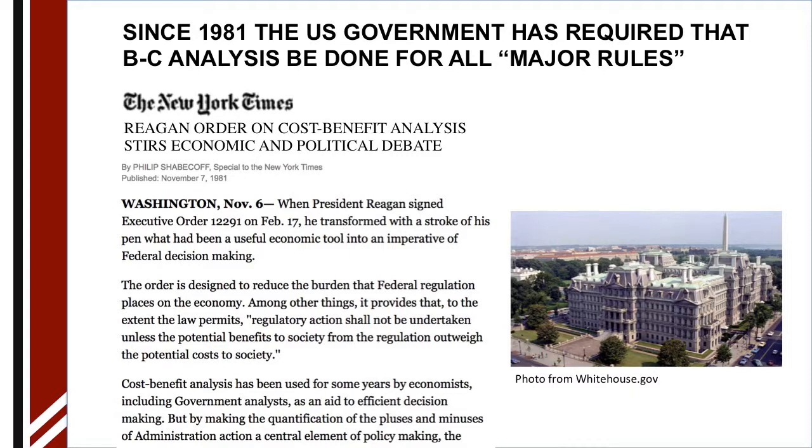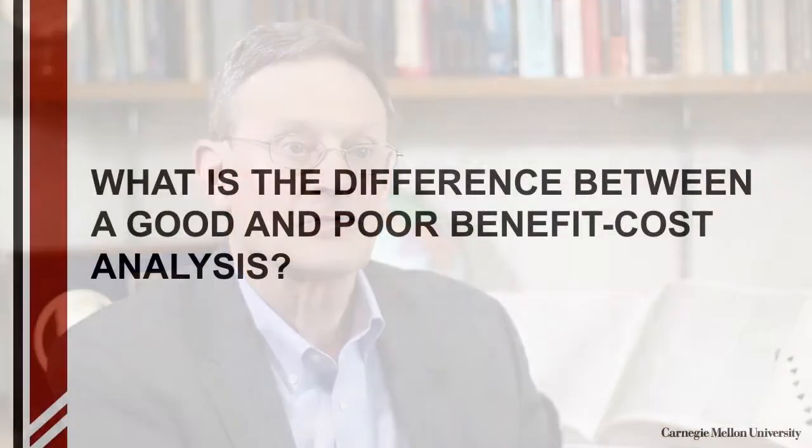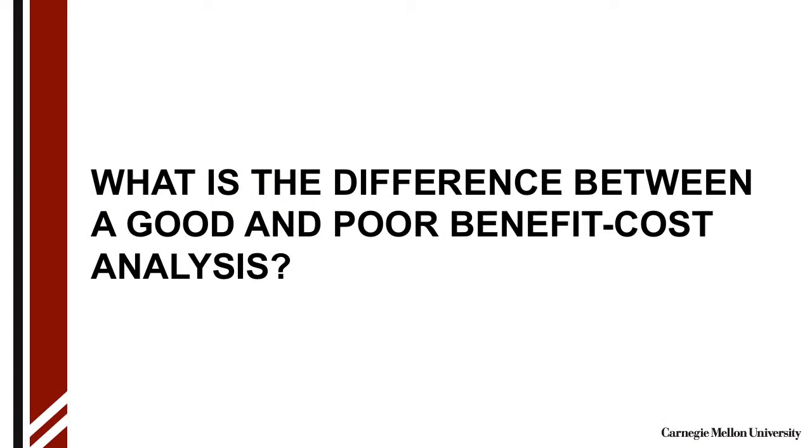Benefit-cost analysis has become very controversial over the years, with many people with different political views arguing for and against it. One of the big issues is that it's really only a method to assure efficiency, as opposed to assuring equity, and many political discussions are fundamentally about issues of equity. So what's the difference between a good and a poor benefit-cost analysis? A poor analysis might leave out many important factors or might not use good modern economic methods. It's also important to recognize that while benefit-cost analysis is focused on efficiency, in real decisions we often care about other things like equity. Sometimes Congress mandates programs.